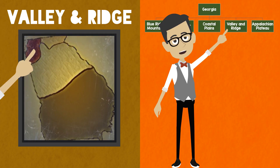To the east of the Appalachian Plateau is the Ridge and Valley region of Georgia. There are mountains in the Ridge and Valley, with valleys in between the mountains.